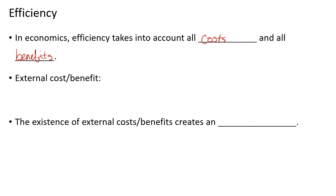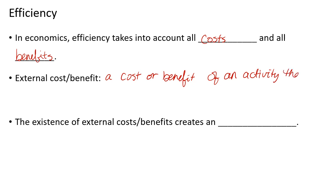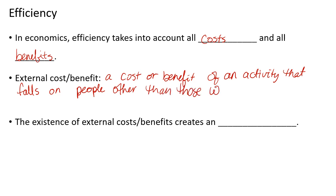Suppliers include all the costs in their calculations, and demanders include all the benefits of purchasing something. However, this isn't always the case in the real world. Sometimes there's an external cost or benefit — this is when there is a cost or benefit of an activity that falls on people other than those who pursue the activity. This existence of an external cost or benefit creates what we call an externality.